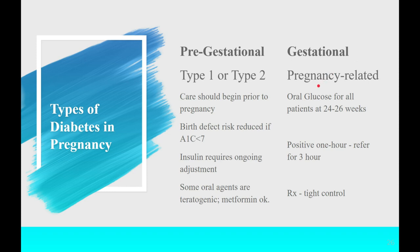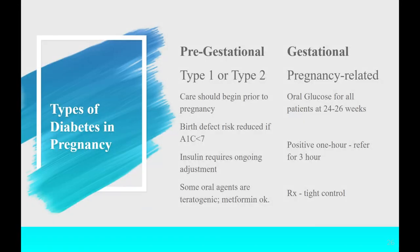The way we diagnose gestational diabetes is with an oral glucose challenge test. It's a one-hour challenge — the patient comes in any time of day, it doesn't have to be fasting. She drinks a very sweet glucose solution, waits an hour, and then another blood glucose is taken. If it's over 140 — some doctors call it at 135 — she's considered high risk and referred for a three-hour test. A healthy pancreas with functioning beta cells should never let serum glucose go above 140.